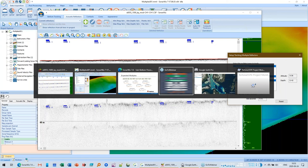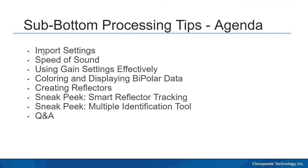To wrap up: we talked about import settings using Sci-C. Speed of sound in SonarWiz can be complicated for sub-bottom because there are multiple places where it's set and they interact — so nail that down before digitizing. We covered how the bandpass filter and AGC work. We talked about coloring and displaying bipolar data. And we previewed the smart reflector tracking and multiple identification tools — those aren't available yet in 7.6, they'll be in 7.7 once development is finished.